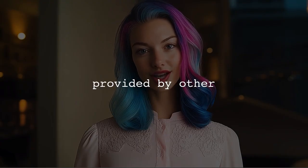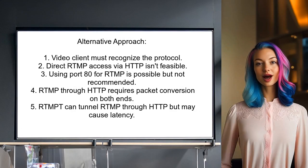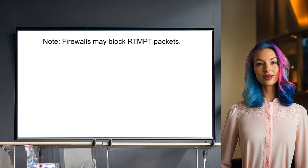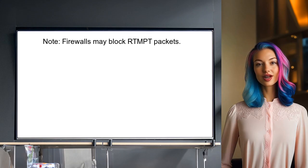Now let's look at answers provided by other users. One user explains that the video client, like VLC Player, needs to know the protocol it's using. Therefore, accessing RTMP content through HTTP directly won't work without modifying the client. They suggest using port 80 for the RTMP server, but caution that this isn't ideal. They also mention that to pass RTMP content through HTTP, both the server and client would need to convert packets, which could reduce performance. They also introduce RTMPT, a method to tunnel RTMP through HTTP, but warn it can add latency and may face firewall issues.